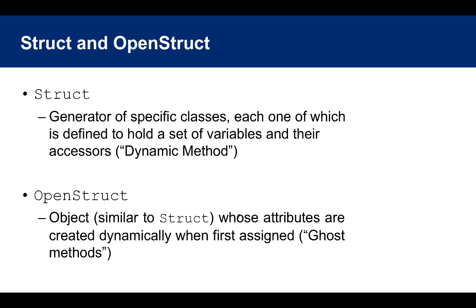For example, Ruby has two constructs: Struct and OpenStruct. Struct is a generator of classes, where each one is defined to hold a set of variables and their accessors — so Struct is really using the dynamic method pattern. OpenStruct is similar to Struct, but its attributes are created dynamically when first assigned — so this is really the ghost methods pattern.